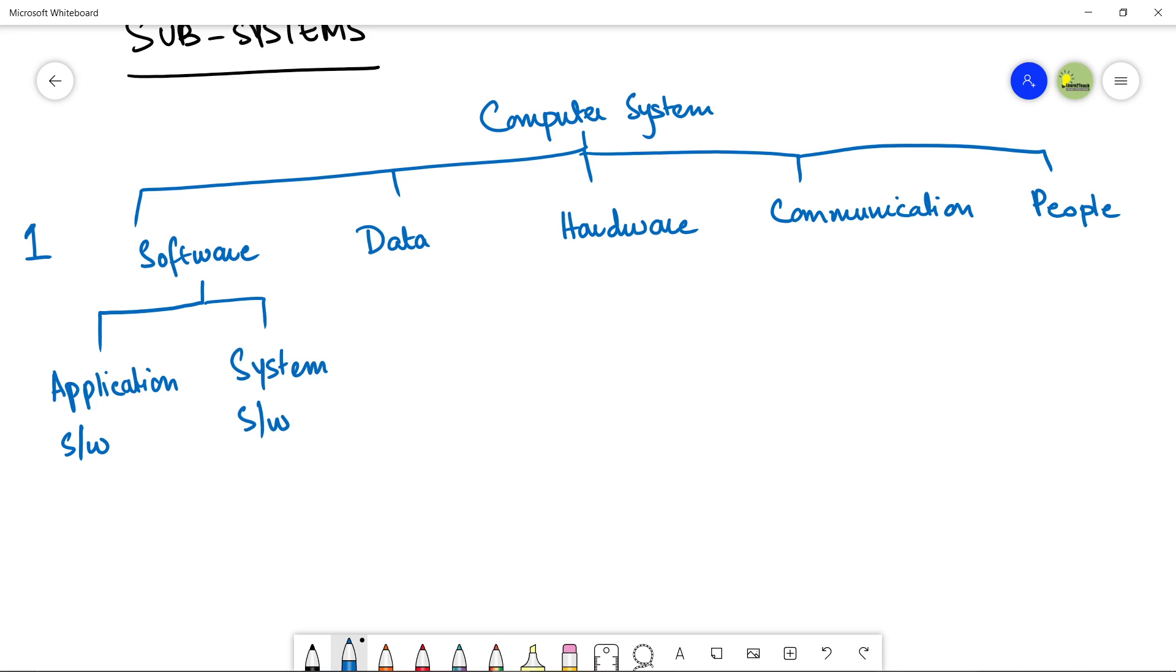So, the second thing is the data. Data can be of three types. It can be taken as an input from user. It can be data that is stored in your computer. Or it can be data that is used to output that you show on your screen. The output data.